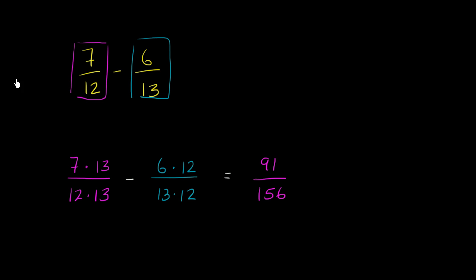And from that, we are going to subtract 6 times 12. 6 times 12 is 72. 72 over, well, we already figured out what 12 times 13 is, or what 13 times 12 is. It is 156. And now that we have a common denominator, we can rewrite this as being equal to 91 minus 72 over 156. And I'll just write that in a neutral color. Over 156.